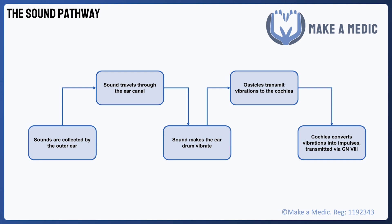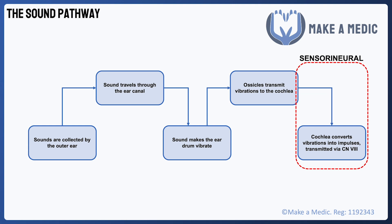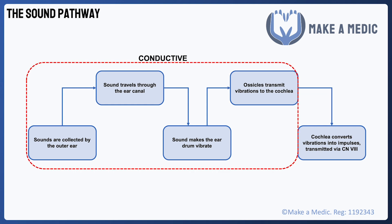This pathway can be affected at different stages, which is what leads to hearing loss. If the final stage involving the cochlear and the nervous system is affected, we use the term sensorineural hearing loss. If any of the other stages before this are affected, we call it conductive hearing loss.